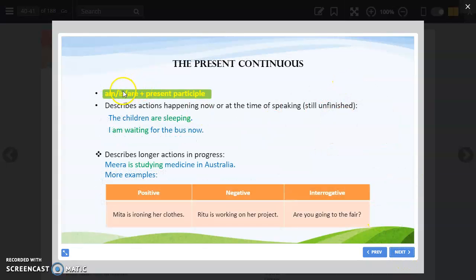Present continuous tense: am, is, or are plus present participle. You have to write -ing. It describes action happening now or at the time of speaking, any work that is happening right now. Or it describes longer actions, like Mira is studying medicine.